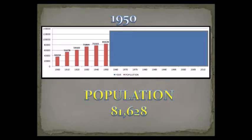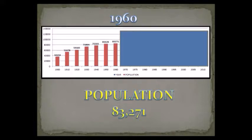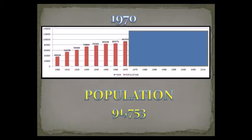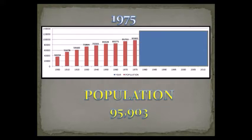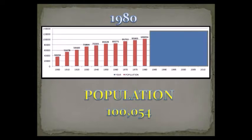See how this keeps growing — and remember, we're working within the same boundaries described earlier. The 1960s came along with the hippie generation, the peace and love, but still Springfield grew: 83,271. Then in the 1970s, Springfield grew again to 91,753. At that point the census people started doing numbers every five years instead of ten, so just five years later it was 95,903. And 1980 was the first time Springfield crested the six-digit mark: 100,054.